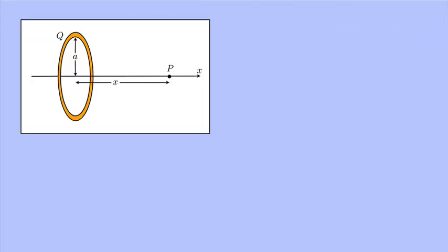So, consider a little bit of charge on the ring, we'll call it dq, and that little bit of charge produces a little bit of electric field at point P. We'll call that dE.